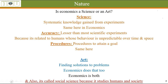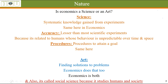Next is the nature of economics. By nature we mean: is economics a science or is it an art? Science generally means a systematic body of knowledge gained from experiments — outcomes confirmed by repeated experiments. The same thing is followed in economics. In economics we also identify problems and conduct experiments, following the same scientific trend.